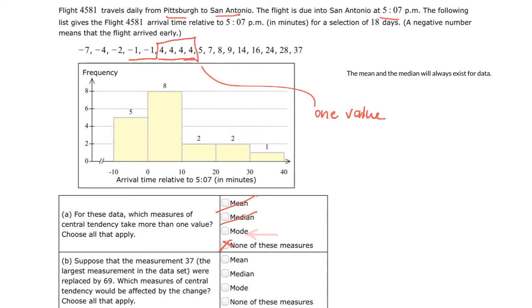All right, let's go on to part B. Suppose that the measure 37, which is the largest measurement in the data set, were replaced by 69. Which measures of central tendency would be affected by the change? So let's go ahead and erase what we had earlier. So now we're going to replace that 37 with a 69. And the question then becomes which measure of central tendency would be impacted? So the four that is the mode, it stays the same whether you replace that 37 with 69 or not.